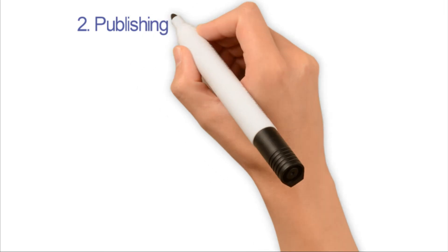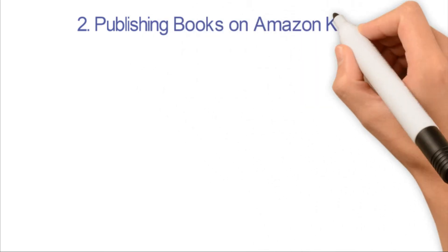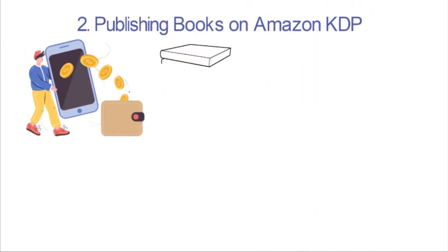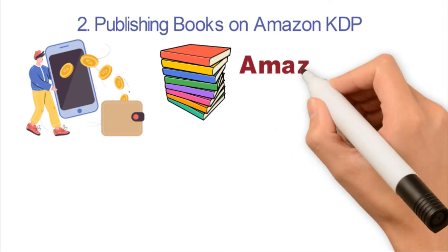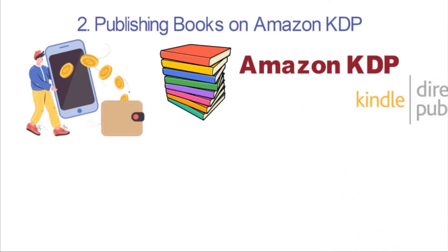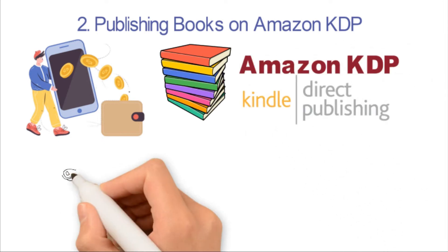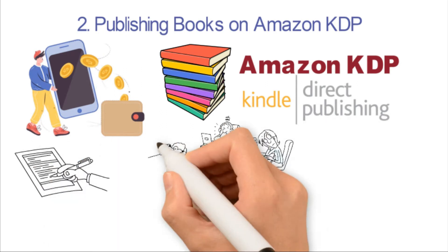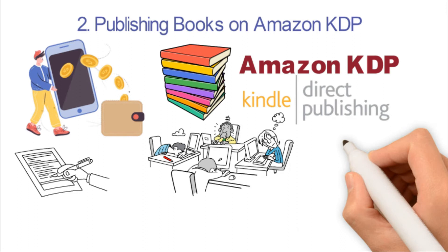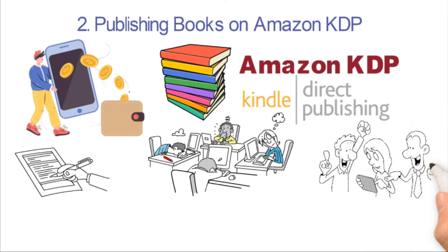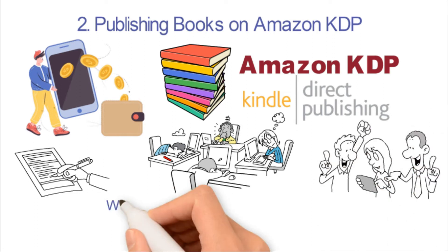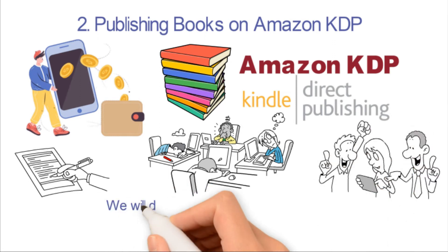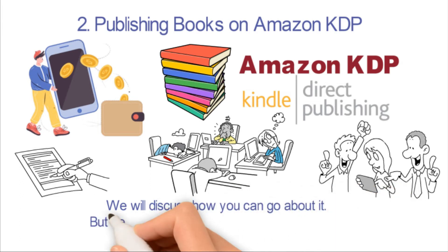Number two: Publishing Books on Amazon KDP. Another way to generate quick money online is to start publishing books on Amazon KDP — Kindle Direct Publishing. It's easy to do, and if you are not a writer or you find writing stressful and boring, you still have a place and a chance to be a successful publisher on this platform.